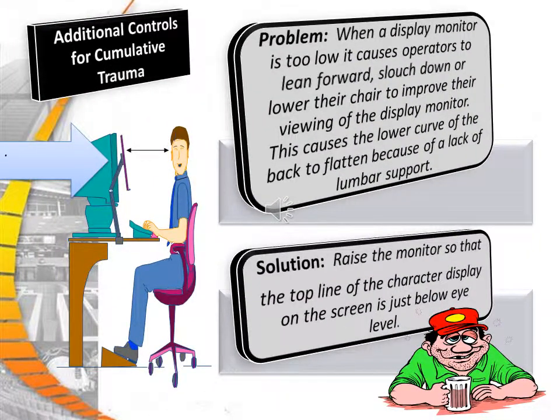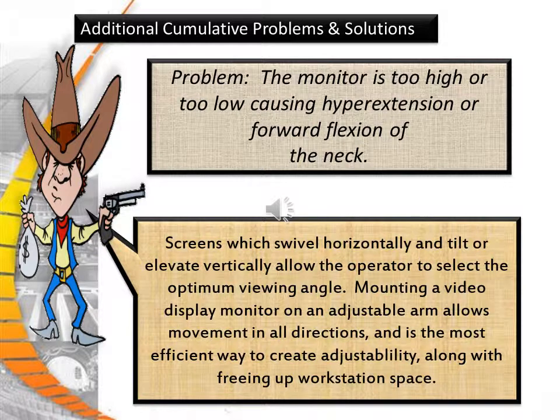When a display monitor is too low, it causes the operator to lean forward, slouch down, or lower the chair, causing the lower curve of the back to flatten due to lack of lumbar support. The solution is to raise the monitor so the top line of the character display is just below eye level. When the monitor is too high or too low, it causes hyperextension or forward flexion of the neck. Screens which swivel horizontally or tilt and elevate vertically allow the user to select the optimum viewing angle. Mounting a video display monitor on an adjustable arm allows movement in all directions and is the most efficient way to create adjustability.